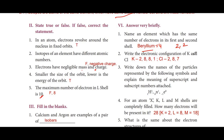Second: Write the electronic configuration of potassium and calcium. For potassium, the electronic configuration is 2, 8, 8, 1. For calcium, the electronic configuration is 2, 8, 8, 2.